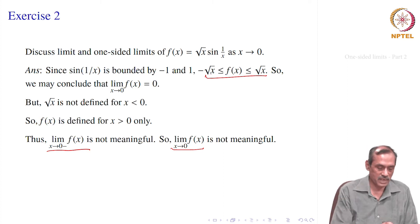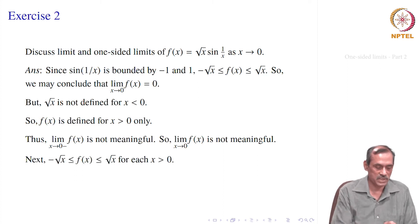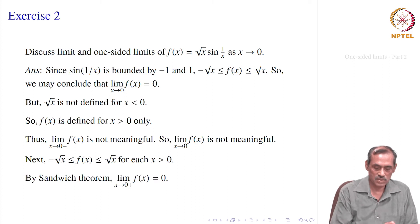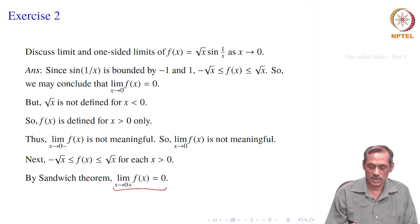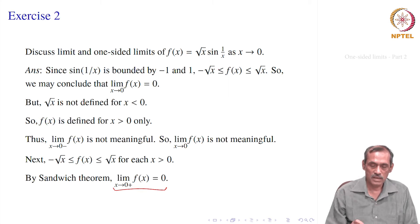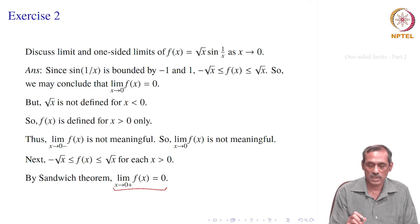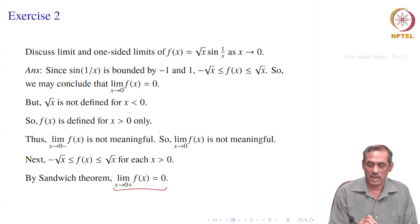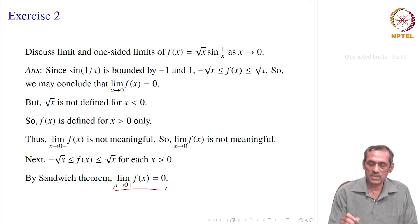So the same sandwich theorem argument gives us that the right-sided limit is 0, and that is the correct result whenever the concepts are meaningful. The left-sided limit is not applicable at all; only the right-sided limit is applicable, and that limit exists and equals 0 for this function.